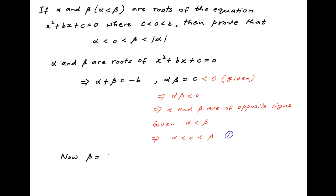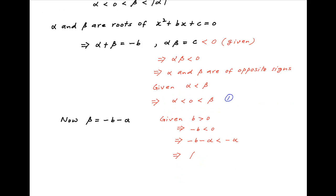Now, alpha plus beta equals minus b, as obtained above. Therefore, beta equals minus b minus alpha. We are given that b is greater than 0, so minus b is less than 0. Subtracting alpha from both sides, we get minus b minus alpha is less than minus alpha. The left-hand side is equal to beta, and therefore beta is less than minus alpha.